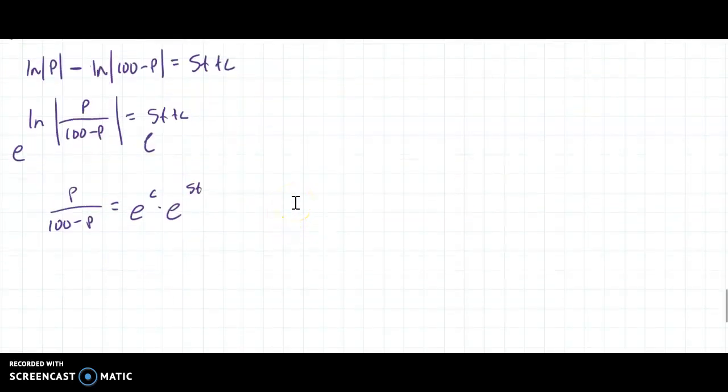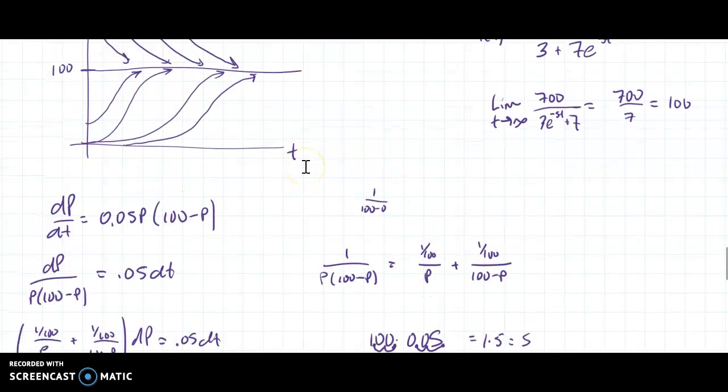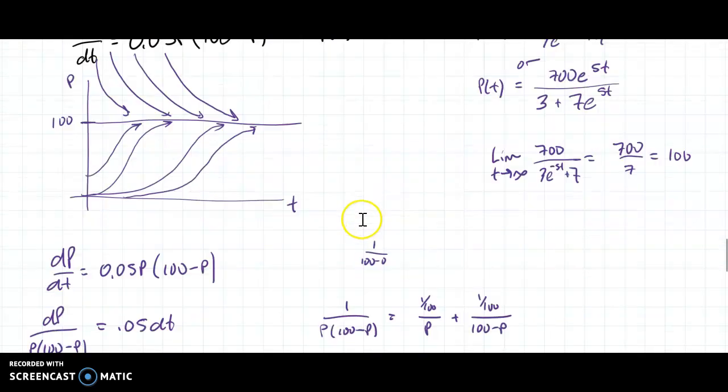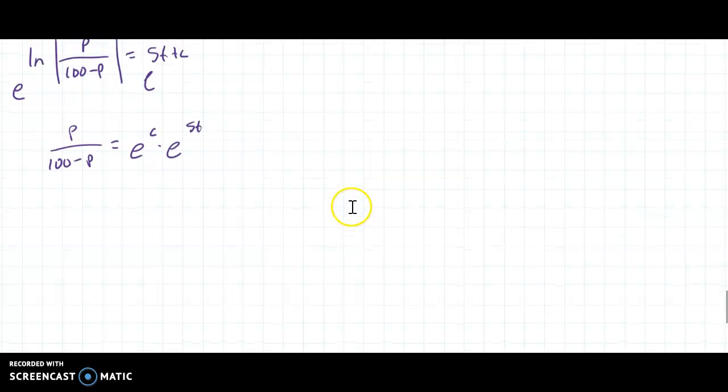From here, I'm not going to multiply here. This is my step to solve for c. So what was my initial condition? It was P(0) = 70. So I'm going to do 70/(100 - 70) = e^c times 1.